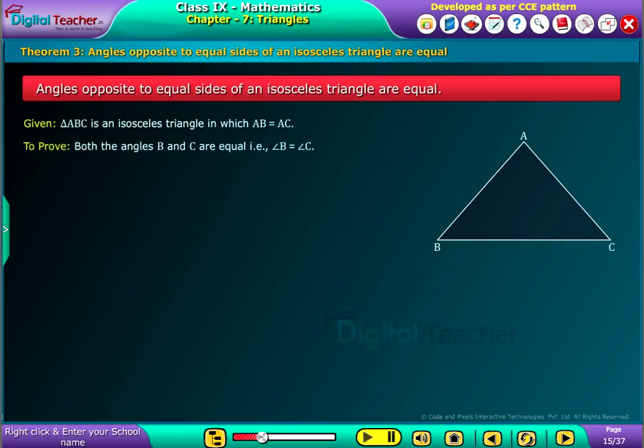To prove: both the angles B and C are equal, i.e., angle B is equal to angle C.